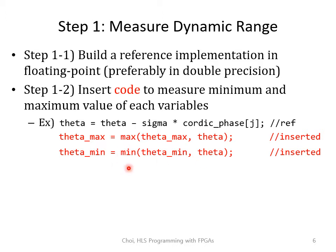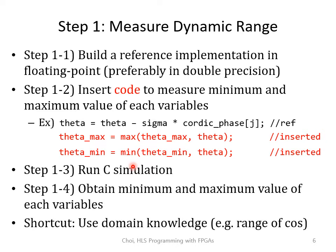These max and min functions can be defined as a C macro. Then you can run C simulation and obtain the minimum and maximum value of each variable. You can simply print out the values of data_max and data_min at the end of C simulation.